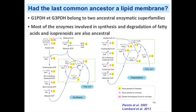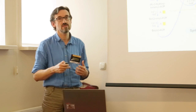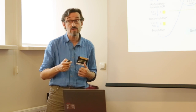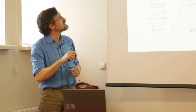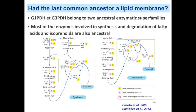We addressed this question by analyzing the phylogenies of all enzymes involved in the synthesis of all components of phospholipids. We showed that the enzymes responsible for synthesizing glycerol phosphate in archaea and bacteria belong to two enzymatic superfamilies that are most likely ancestral. This suggests LUCA was able to synthesize glycerol phosphate, and most enzymes for the lateral chains — fatty acids and isoprenoids — are also ancestral and well conserved in archaea and bacteria.